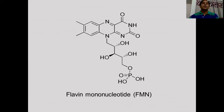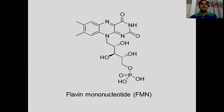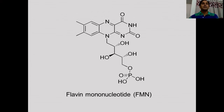Flavin mononucleotide, or FMN, also known as riboflavin 5-phosphate, is a biomolecule produced from riboflavin, which is also known as vitamin B2. It functions as a prosthetic group in various oxidoreductase reactions including NADH dehydrogenase, as well as a cofactor in biological blue-light photoreceptors. Flavin mononucleotide is also used as an orange-red color additive in European countries.